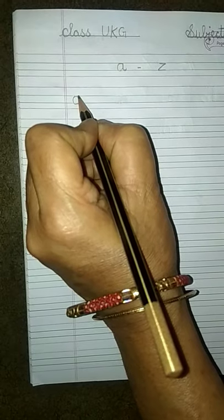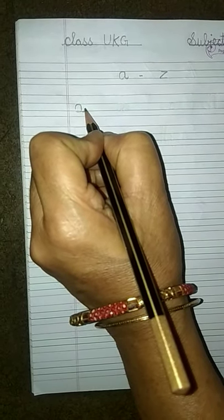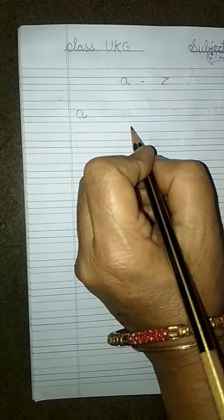Hello students, earlier we had practiced capital A to Z in one page. Now today we will practice small a to z in one page. Look here — in between the first blue line to the second blue line, a small curve, go up, come down, and a small curve upward: a.